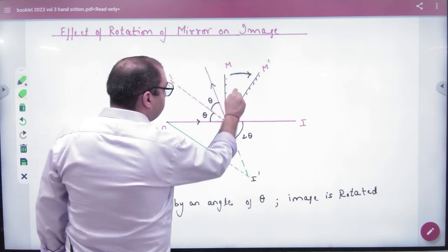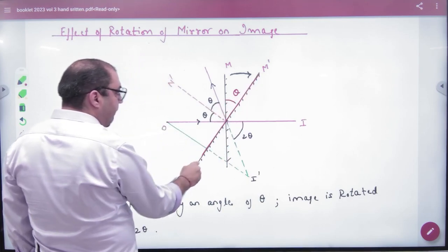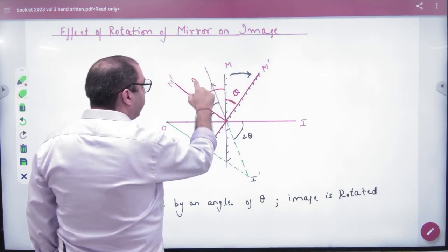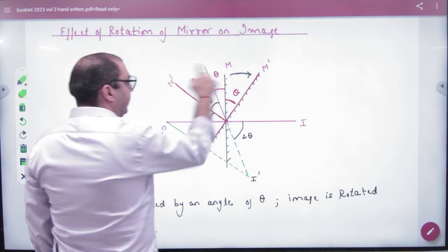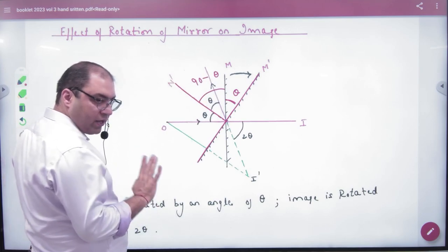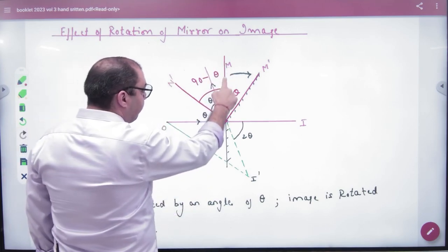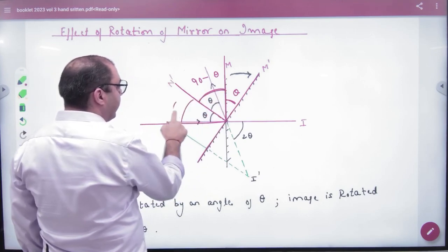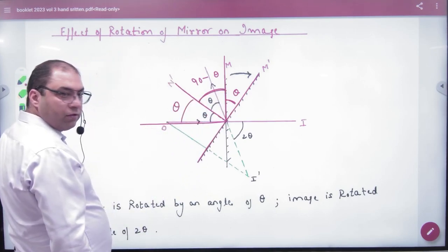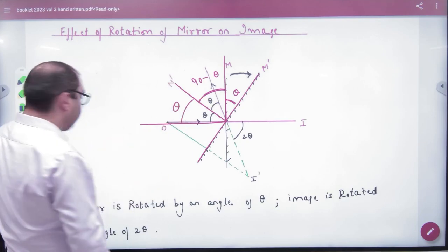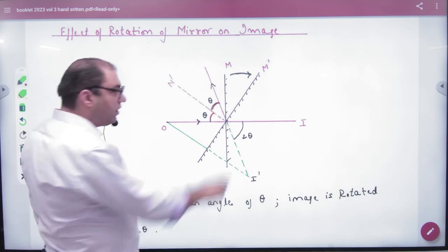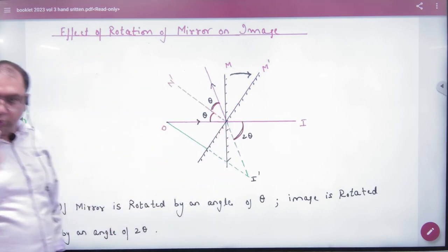If this angle is theta, this one and this one is 90 degree. And if it is theta, what will this angle be? 90 minus theta. And if this one is 90 and this one is 90 minus theta, then how much is theta? So what will this angle prove? Theta. So if this is theta angle of incidence, then what will the angle of reflection also be? Theta. By vertically opposite, what will this be? 2 theta.